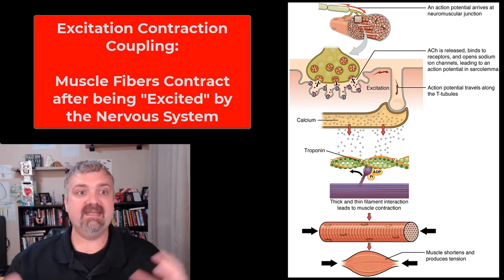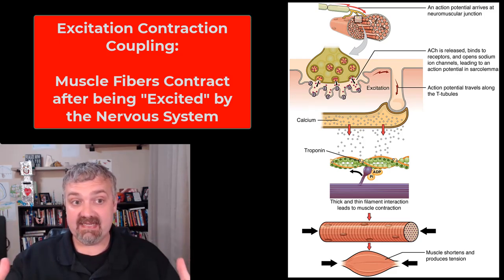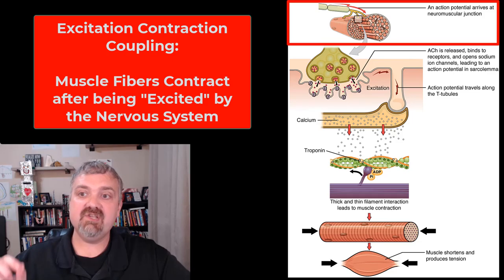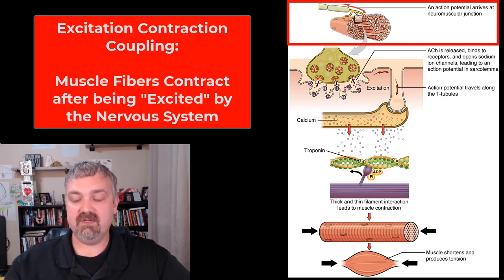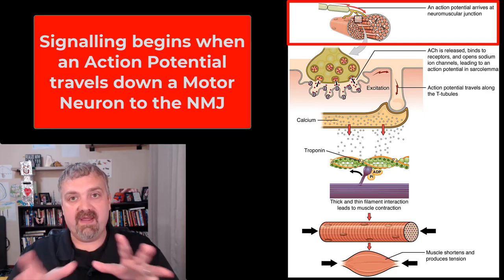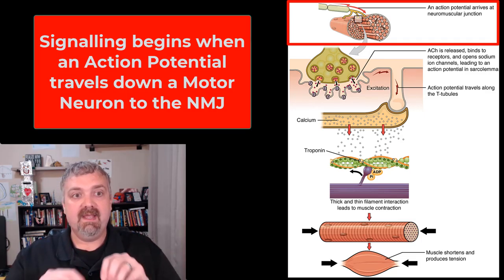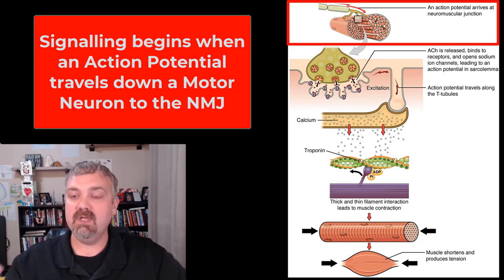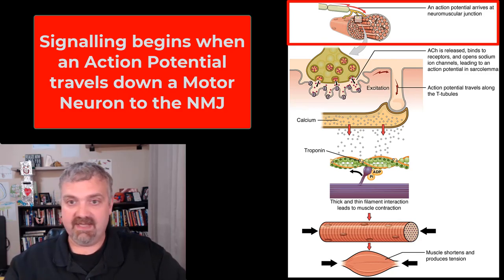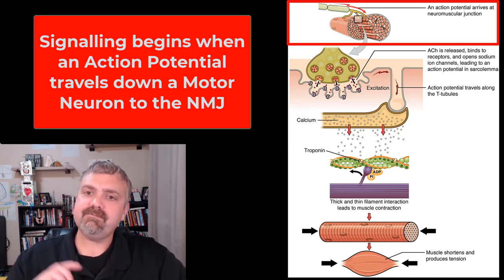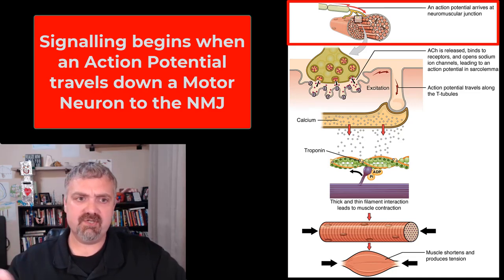For a muscle fiber to contract, its membrane has to be excited. What excites the membrane of a muscle cell or muscle fiber is the nervous system. An action potential arrives at a neuromuscular junction. A motor nerve, or motor unit, will branch and branch until it reaches individual neuromuscular junctions — as the name implies, it's where a nerve ends and a muscle come together.